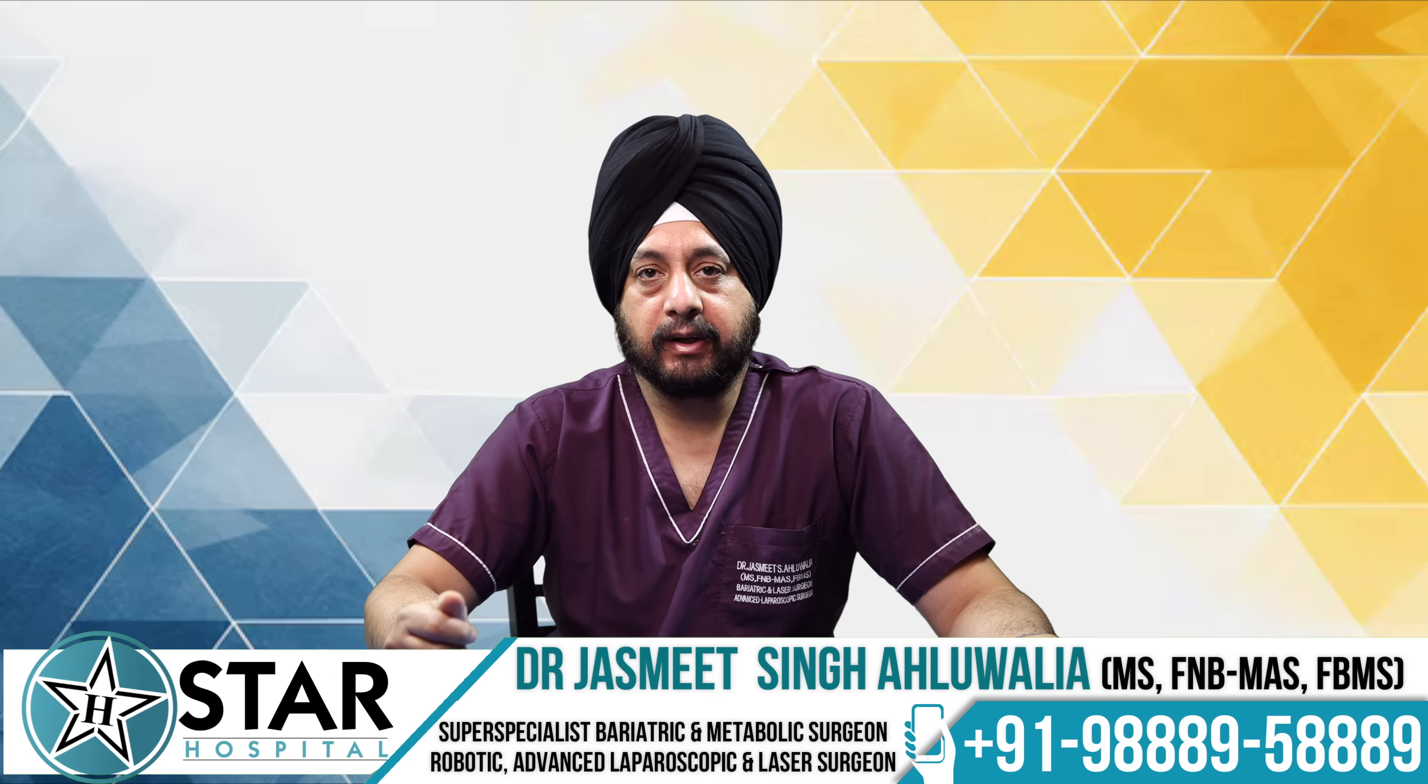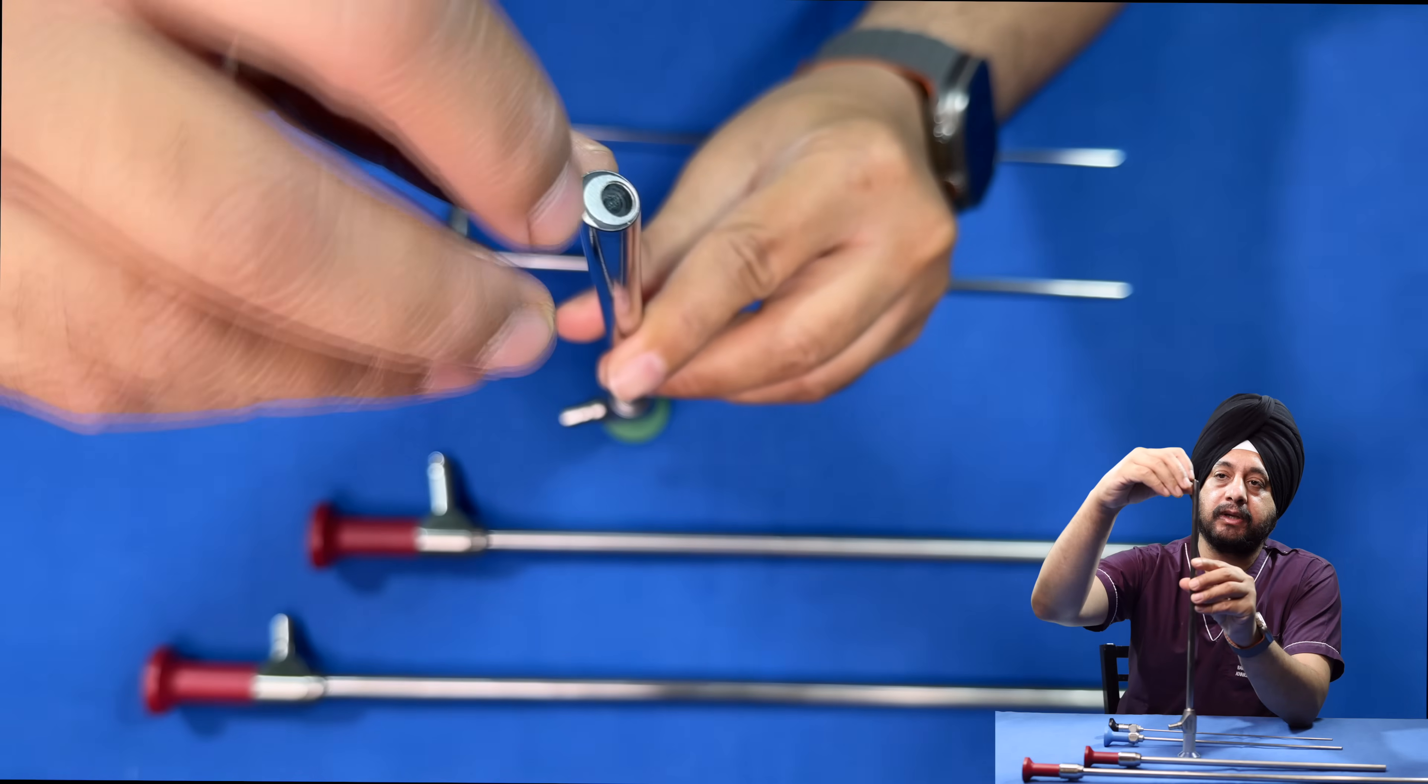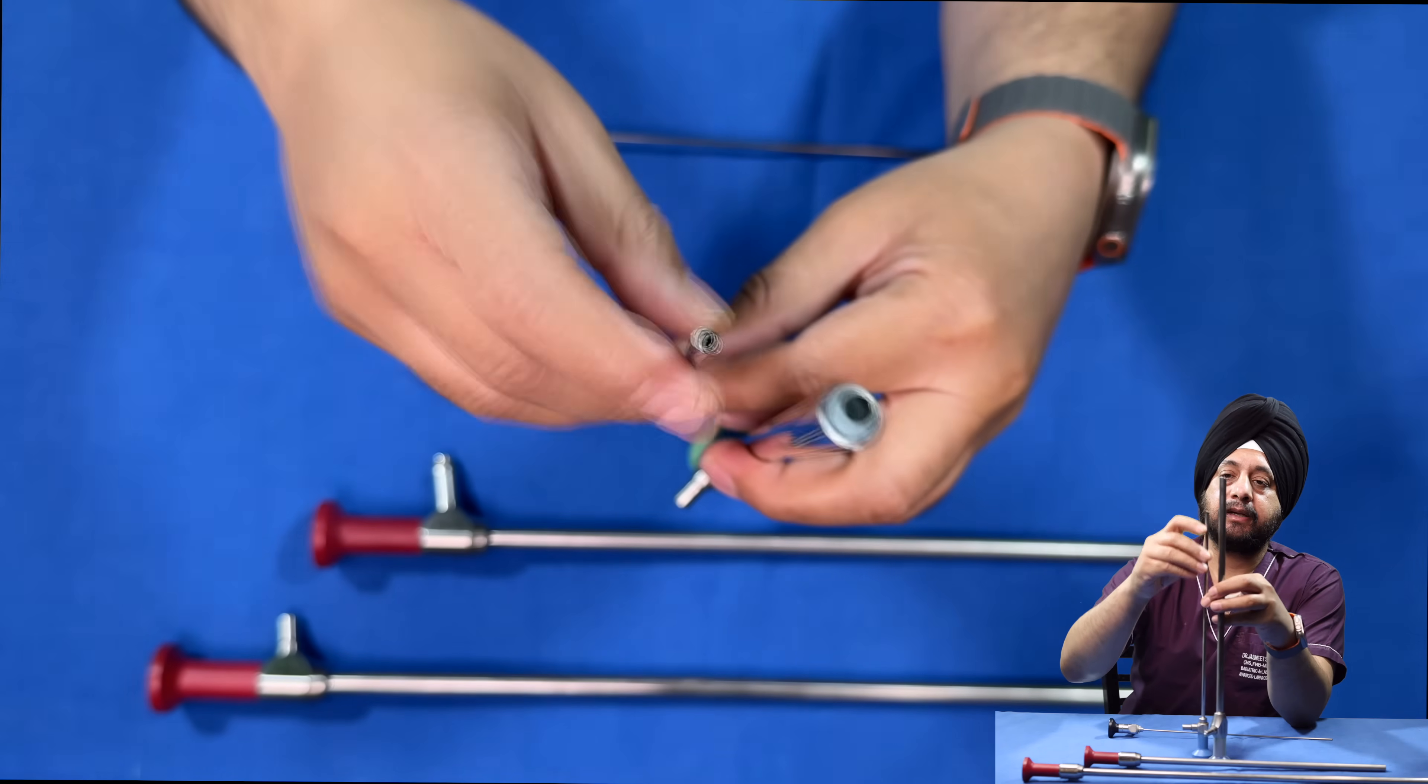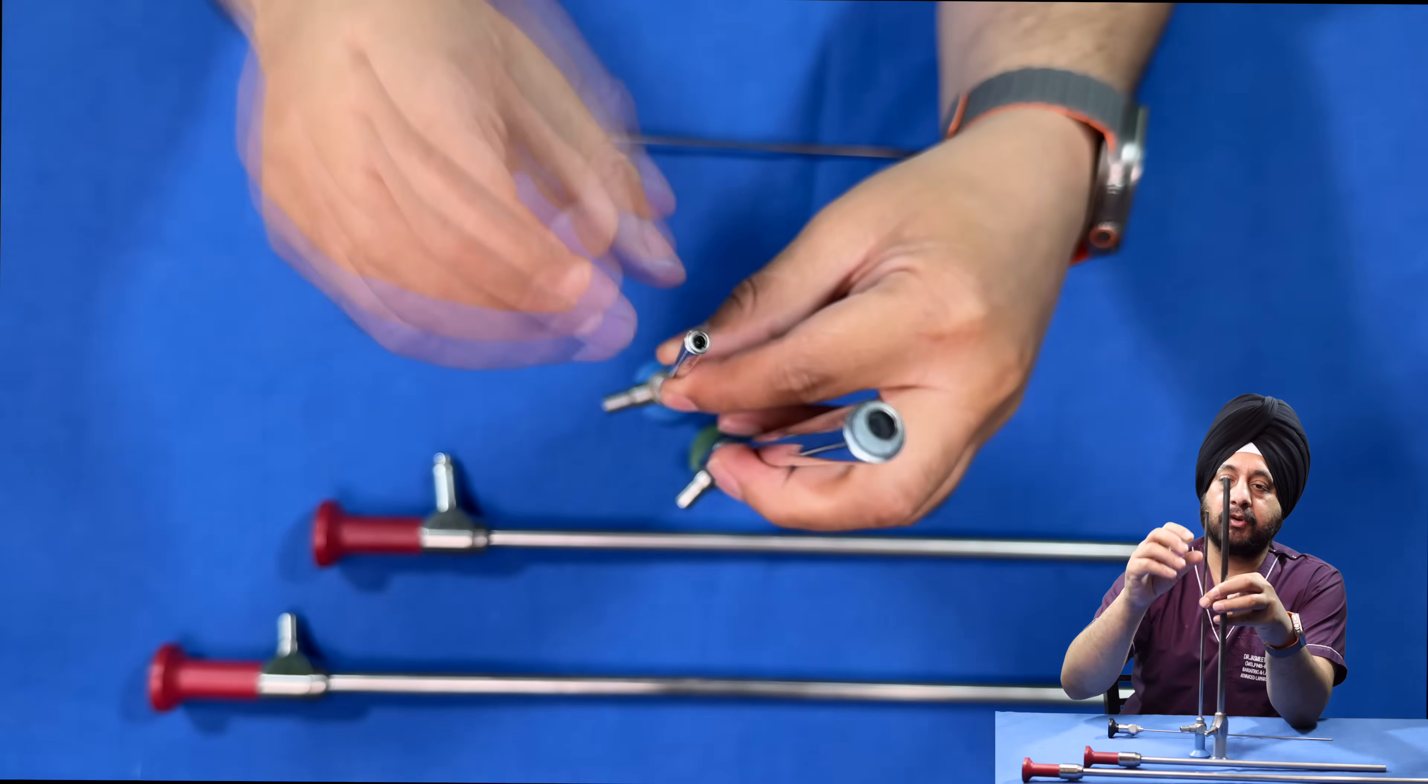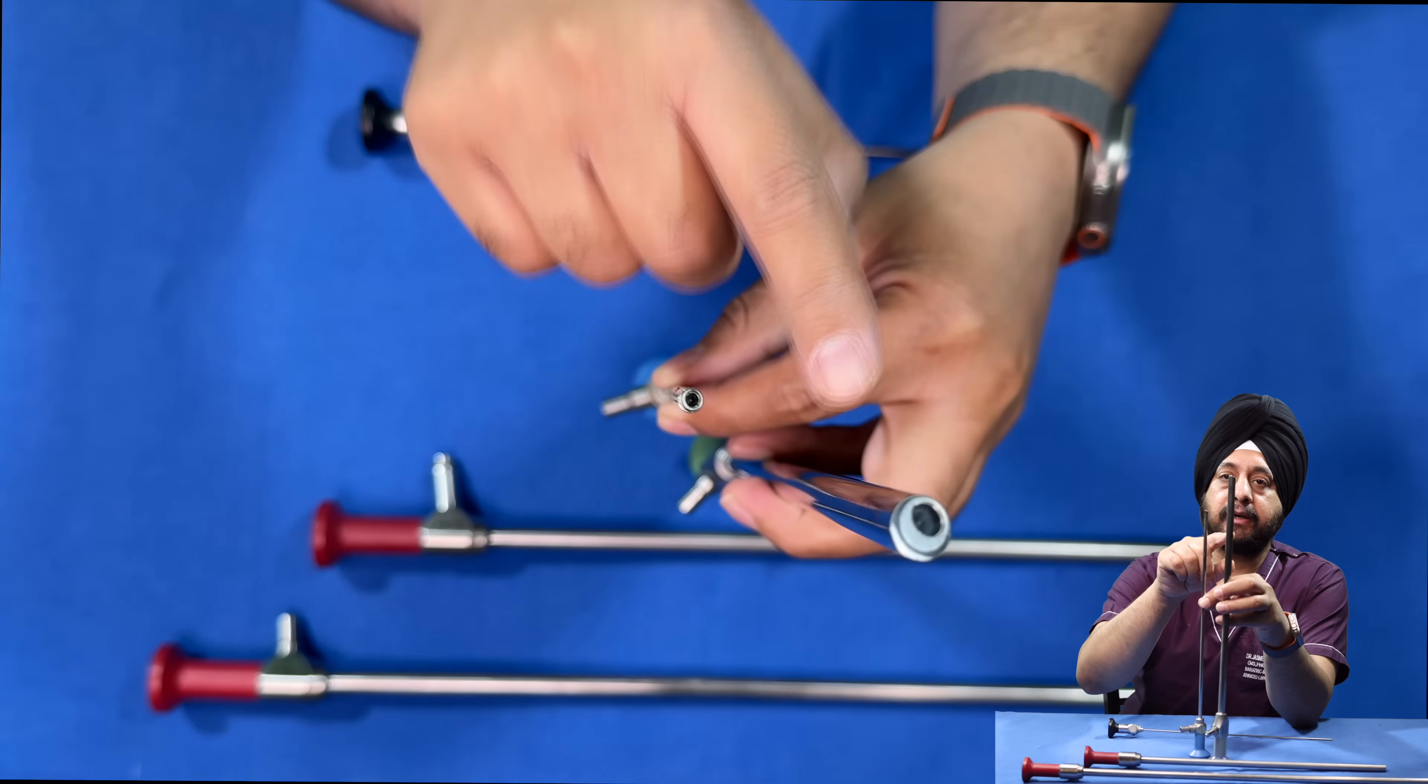The bigger diameter of the scope allows more light to come back, thereby giving you the best possible image. With a 10 mm scope, the aperture or outlet for the light will be much bigger as compared to a 5 mm scope. The 5 mm scope has a smaller outlet and conducts less light.